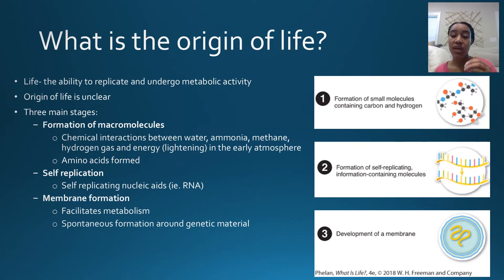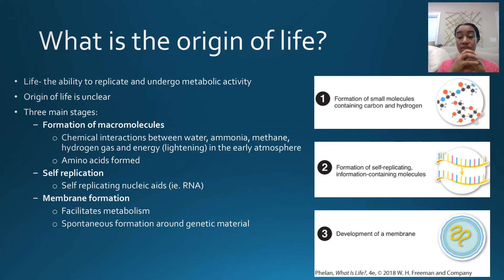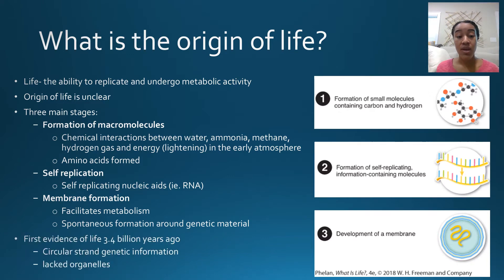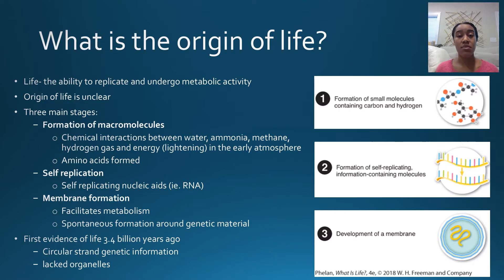If you have some nucleic acids out there and all of a sudden a lipid bilayer somehow spontaneously forms around that nucleic acid, now we have our first rudimentary cell. This is similar to what has been found in the fossil record. There's evidence of life going back as far as 3.4 billion years ago, and those fossils are actually cells that lack any organelles and lack a nucleus — just genetic information encased in a membrane.